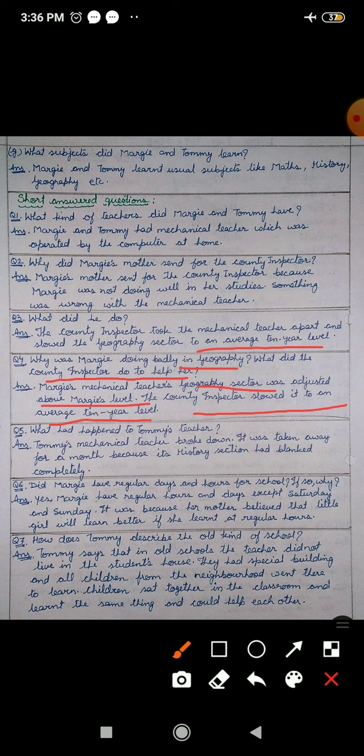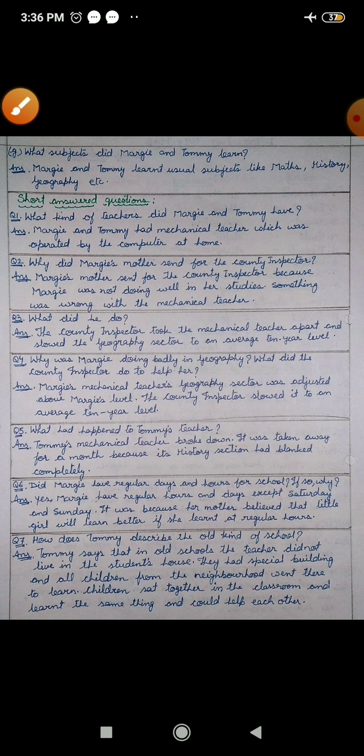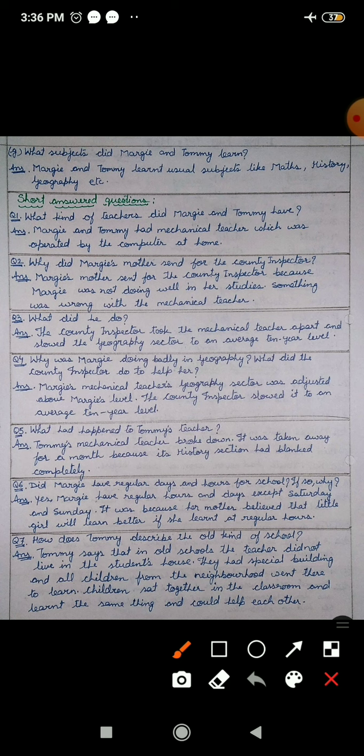What had happened to Tommy's teacher? Tommy ke teacher ke saath kya hua tha? Tommy's mechanical teacher broke down. Wo usme bahut badi problem aa gayi thi. It was taken away for a month, aur usko ek mahine ke liye alag le jaya gaya tha, because its history section had blanked completely. Kyonki uske history section mein jyada badi problem aa gayi thi to usko ek mahina lag gaya tha repair ke liye.